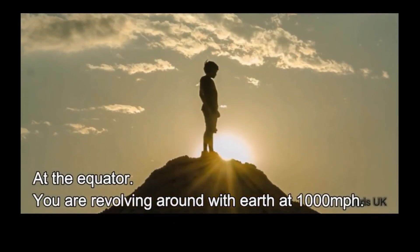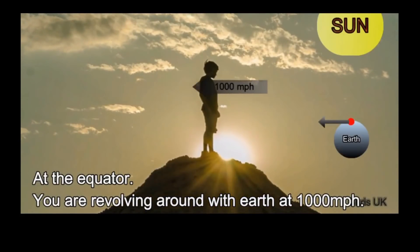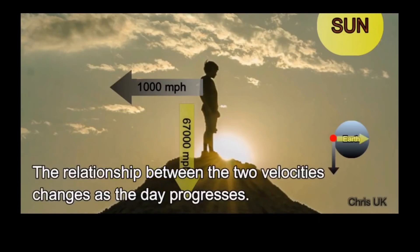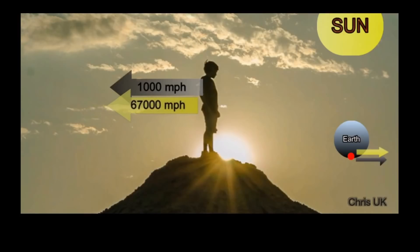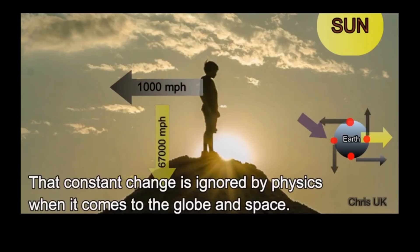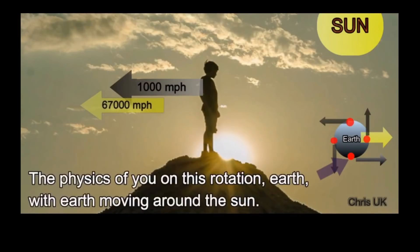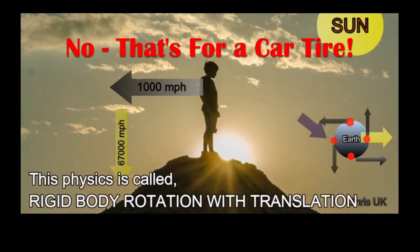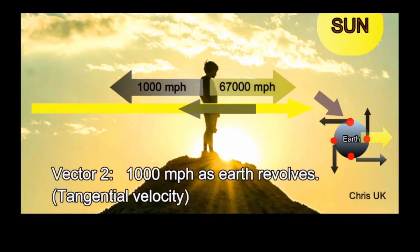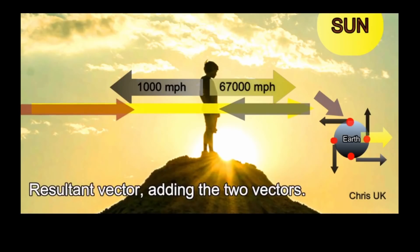At the equator, you are revolving around with Earth at a thousand miles an hour. At the same time, you and the Earth are travelling around the Sun at 67,000 miles an hour. The relationship between the two velocities changes as the day progresses. That change is constant. That constant change is ignored by physics when it comes to the globe and space. This physics is called rigid body rotation with translation. First vector: 67,000 miles an hour around the Sun. Vector 2: 1,000 miles an hour as Earth revolves. Resultant vector: adding the two vectors.